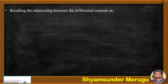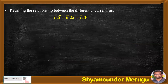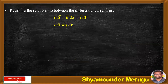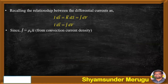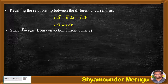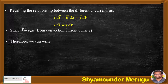Recalling the relationship between differential currents: IdL bar equals K bar dS equals J bar dV. Here, K bar is the surface current distribution and J bar is the volume current distribution. From this expression, we can write IdL bar equals J bar dV. And also, we know that J bar equals ρV U bar, taken from the convection current density. Therefore, we can write IdL bar equals ρV U bar dV.